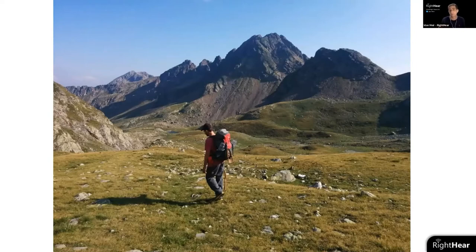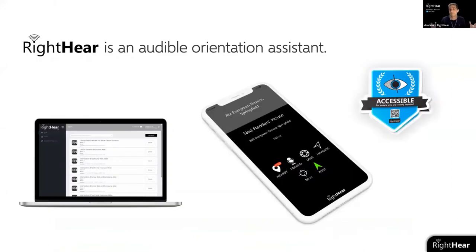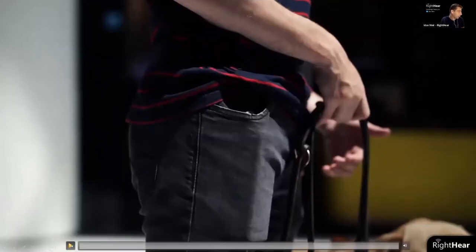Almost five years ago, we thought that if we could solve the navigation challenge for those who have it hardest — people who are blind or visually impaired — we could eventually solve my own getting-lost problem too. What we do at Right Here, very briefly, is we've developed an audible wayfinding system. It runs through an app on the user side, is managed through the cloud, and we use beacons in the physical space. Let me share a one-minute video of how it looks in action.